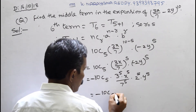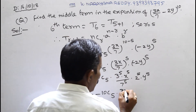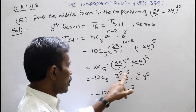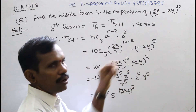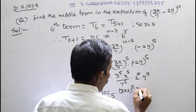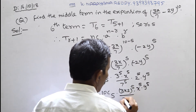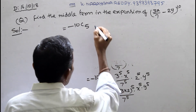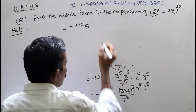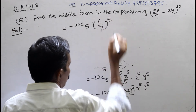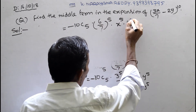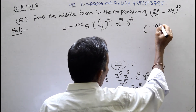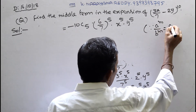Therefore: −10C5 · (3 × 2)^5 · x^5 · y^5 / 7^5. Using the formula a^m · b^m = (ab)^m, we combine 3^5 and 2^5 as 6^5. Then using a^m / b^m = (a/b)^m, we write this as −10C5 · (6/7)^5 · x^5 · y^5.